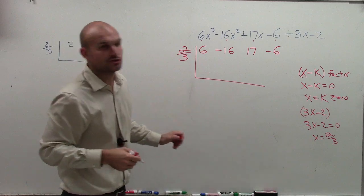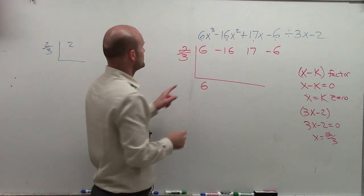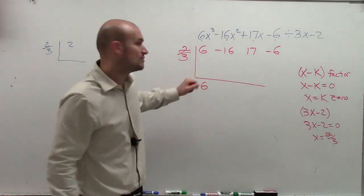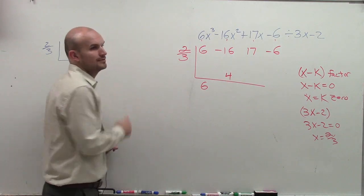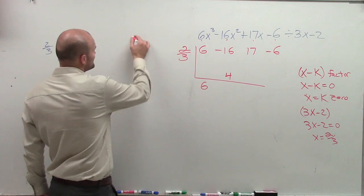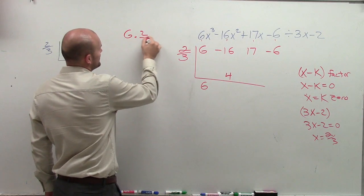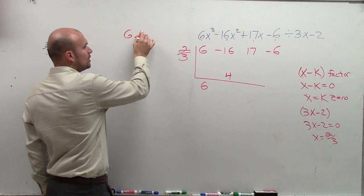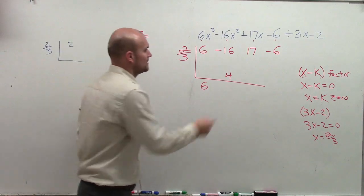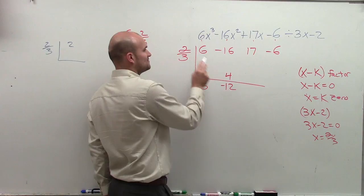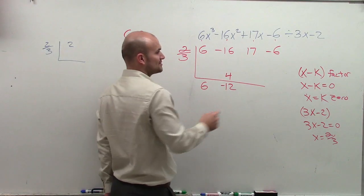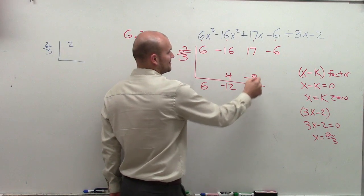And remember, the first number you do is you drop down, which is 6. So you have 6 times 2 thirds, which is going to leave me with 4. Come on, really? All right, I'll do the first one. 6 times 2 thirds. 6 times 2 is 12. 12 divided by 3 is 4. Negative 16 plus 4 is negative 12. Negative 12 times 2 thirds is going to give us negative 8.